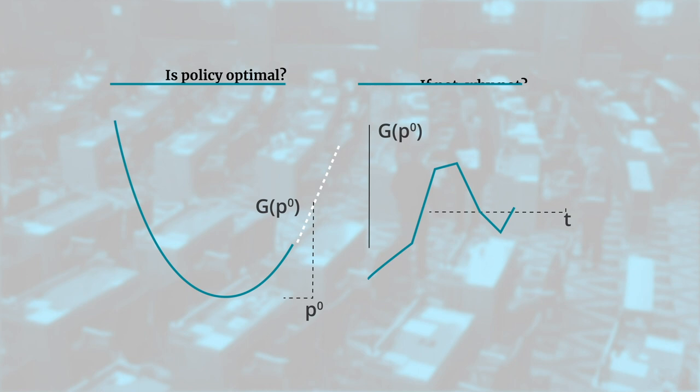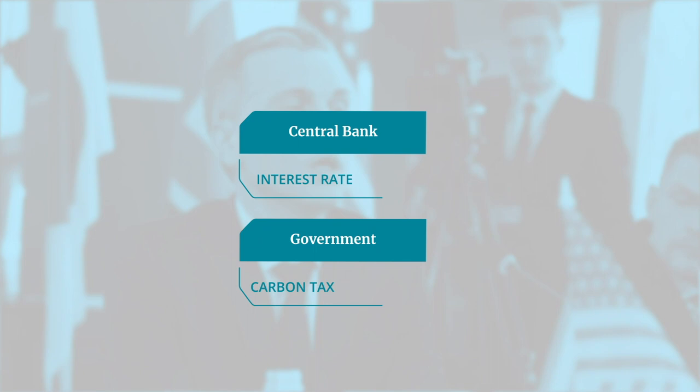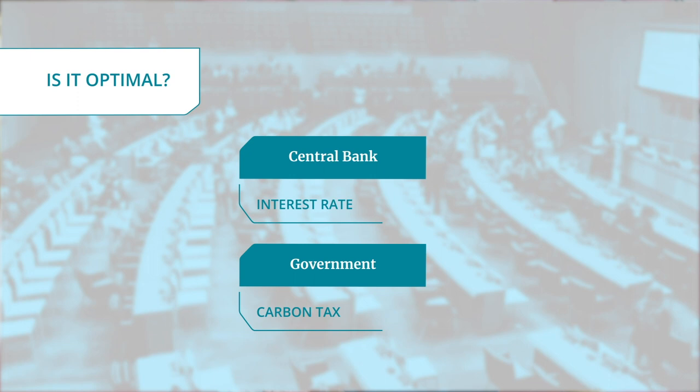As an example, you can think about a central bank who proposes an interest rate choice, or a government who sets a carbon tax. In each case, you can ask: is that proposed policy choice optimal? And if not, why is it not optimal?